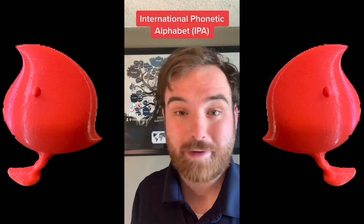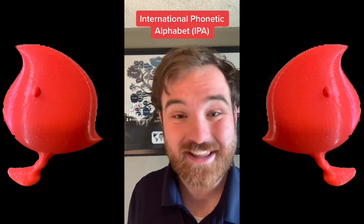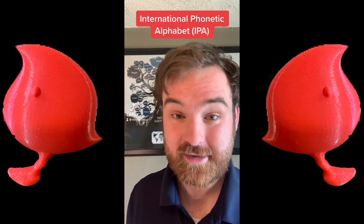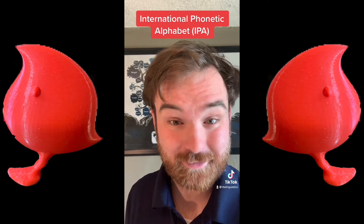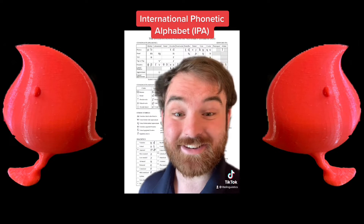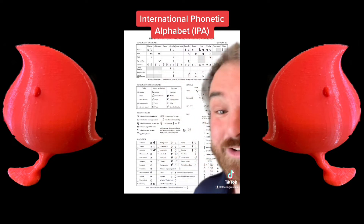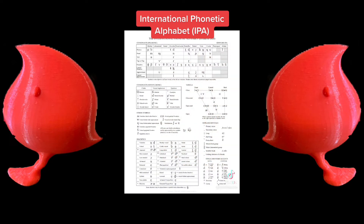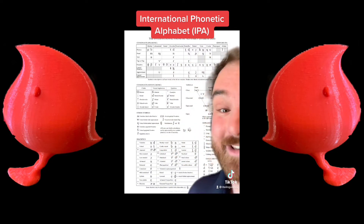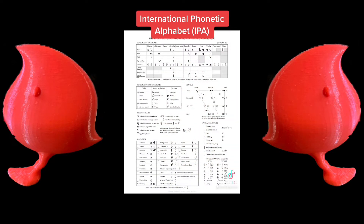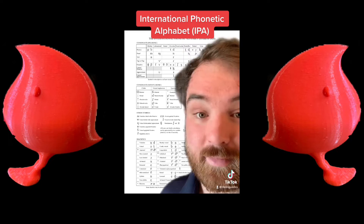What's the best way to write exactly what's being said? Welcome to Light Linguistics. This is the International Phonetic Alphabet, a chart that contains every sound in human language.